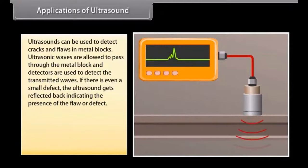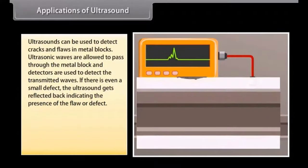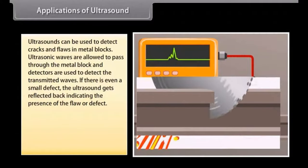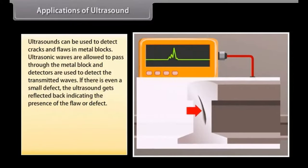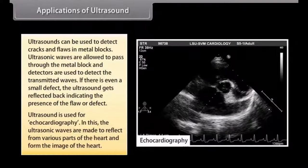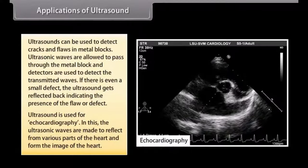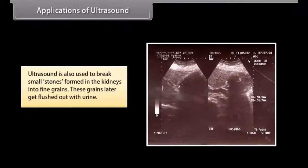Ultrasounds can be used to detect cracks and flaws in metal blocks. Ultrasonic waves are allowed to pass through the metal block and detectors are used to detect the transmitted waves. If there is even a small defect the ultrasound gets reflected back indicating the presence of the flaw or defect. Ultrasound is used for echocardiography. In this the ultrasonic waves are made to reflect from various parts of the heart and form the image of the heart. Ultrasound is also used to break small stones formed in the kidneys into fine grains. These grains later get flushed out with urine.